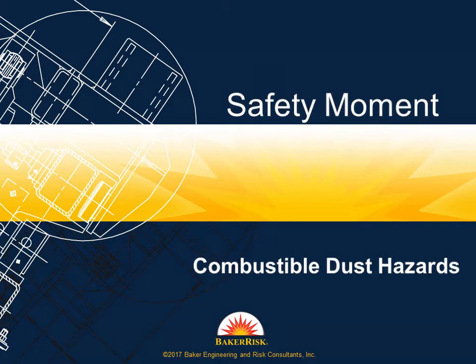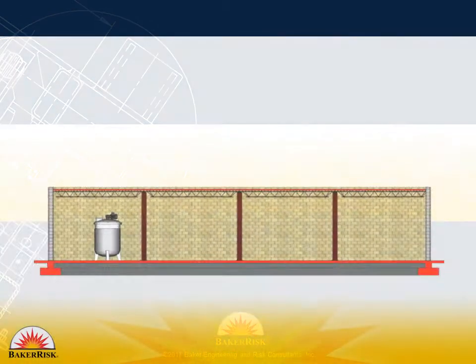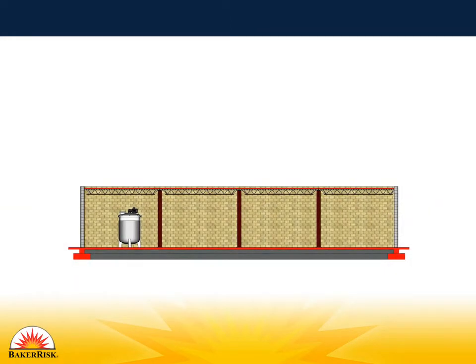Dust explosions are often classified as being either primary or secondary in nature. Primary dust explosions typically occur within individual pieces of equipment inside an enclosure. These primary explosions are generally controlled by pressure relief venting through purpose-built ducting to atmosphere.